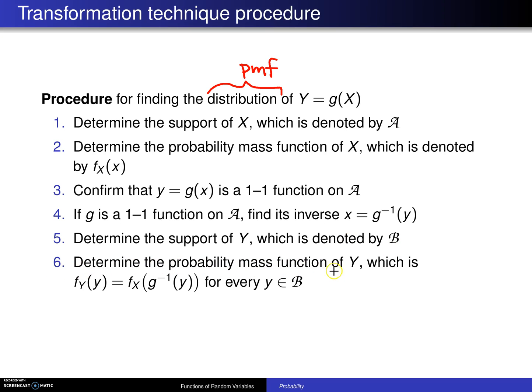And finally, step six, determine the probability mass function of the random variable Y, which is F sub Y of y equals F sub X of g inverse of y for every y element of B by the theorem.